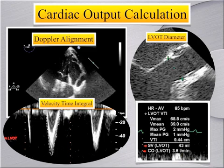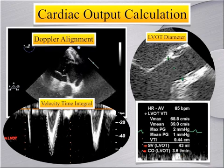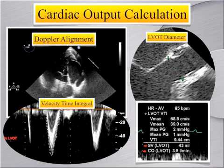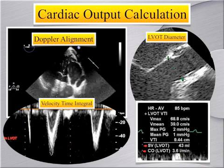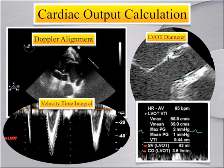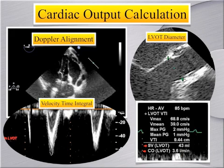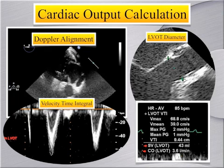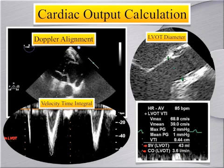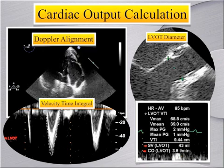Here we have assembled all of the information required to calculate stroke volume and cardiac output. On the left, the Doppler beam is aligned in the left ventricular outflow tract and a pulse wave envelope is positioned within one centimeter of the aortic valve. The hollow pulse wave signal is recorded and a velocity time integral is obtained by tracing the envelope. On the right, the LVOT measurement is obtained in the mid-esophageal aortic valve long axis view with reduced depth. The diameter is measured within one centimeter of the valve during valve opening. A heart rate is calculated from the R-R interval on the electrocardiogram, and the echo machine calculates both stroke volume and cardiac output.